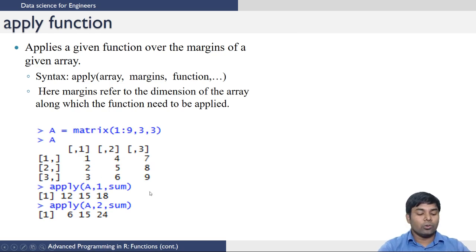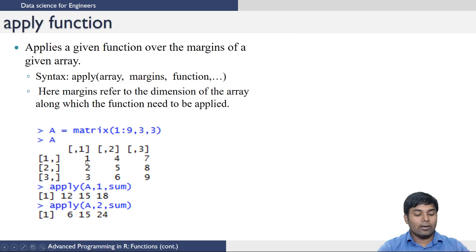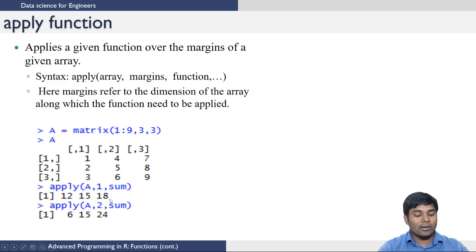You can use the apply function for this. The syntax is: apply the function on matrix A across its rows — margin 1 — and the function to apply is sum. What it does is sum the first row: 7 plus 4 plus 1 equals 12, then the sum of the second row, and then the sum of the third row, printing each output.